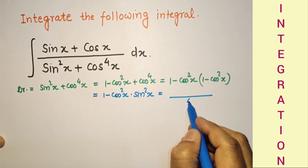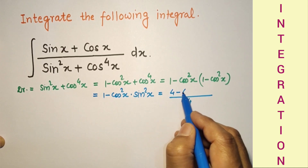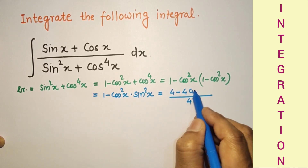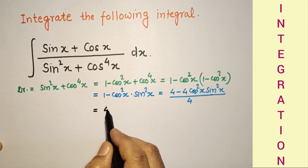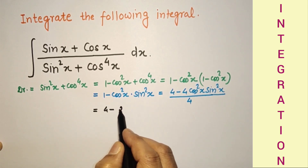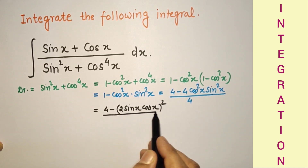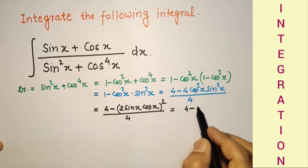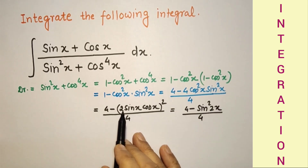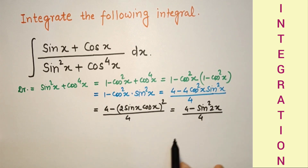Expanding, we get 4 − 4cos²x·sin²x, which equals 4 − (2 sin x cos x)² = 4 − sin²2x, since 2 sin x cos x = sin 2x. So the denominator is (4 − sin²2x) / 4.